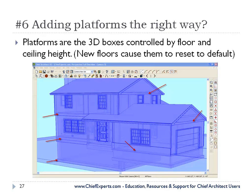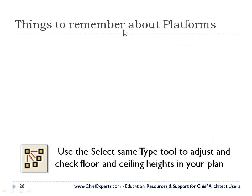Mistake number six — and this is a big one — is adding platforms. I see more people pulling their hair out because of this and they don't quite understand why. Platforms are your floors and ceilings. They have a big effect on a lot of things in your plan. I want to go over a few things to remember about platforms and then show you how to add them.